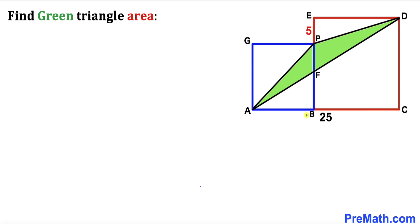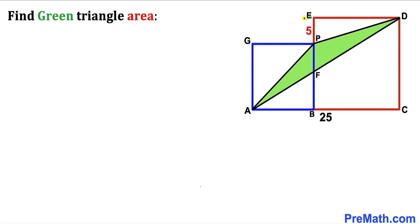Welcome to pre-math. In this video we have blue and red squares put together along with a green triangle APD confined between them, as shown in the diagram. Side AC is 25 units, segment EP is 5, and our task is to calculate the area of this green shaded triangle APD.